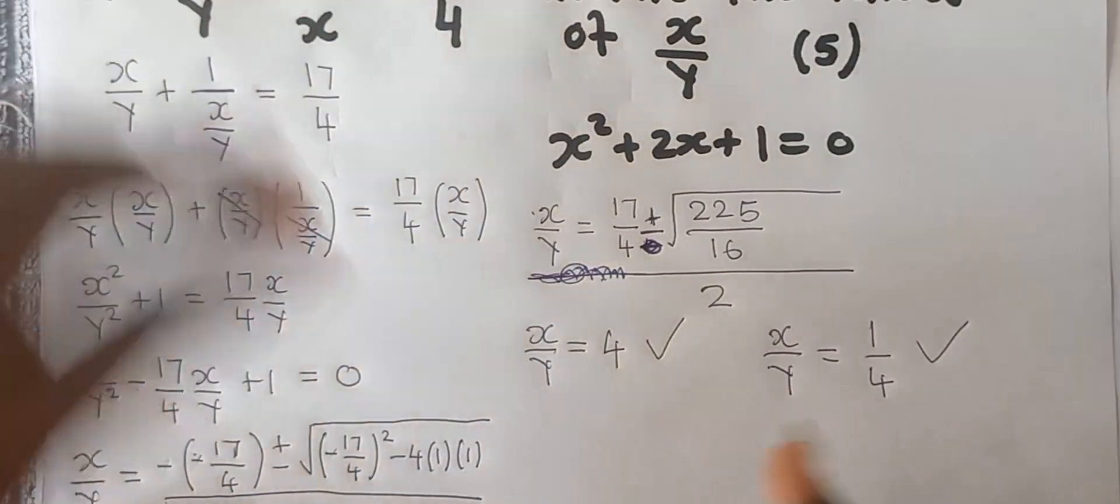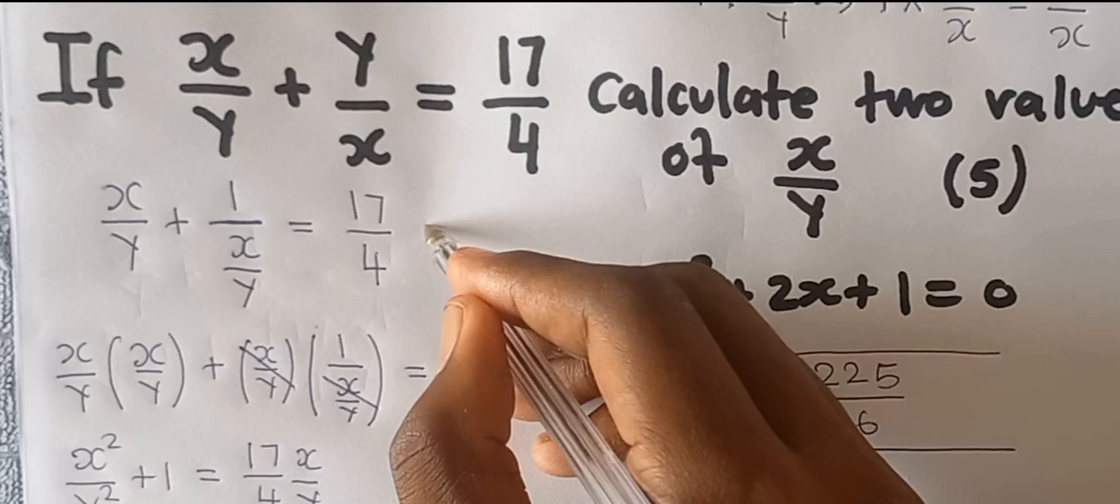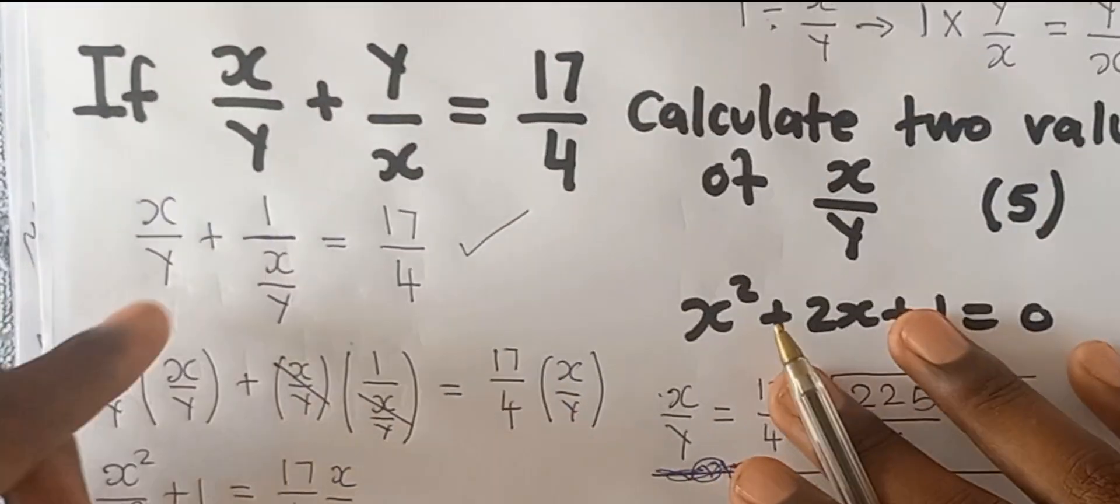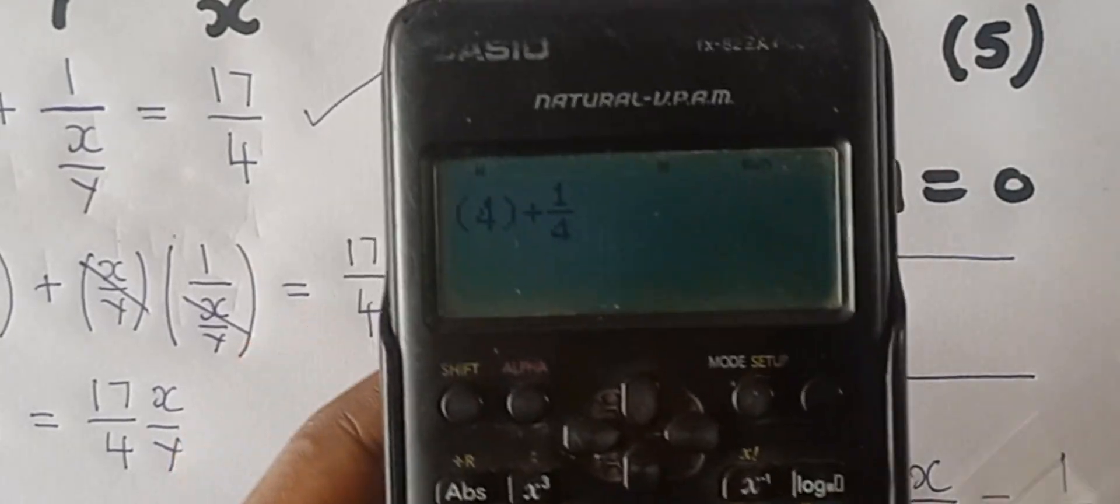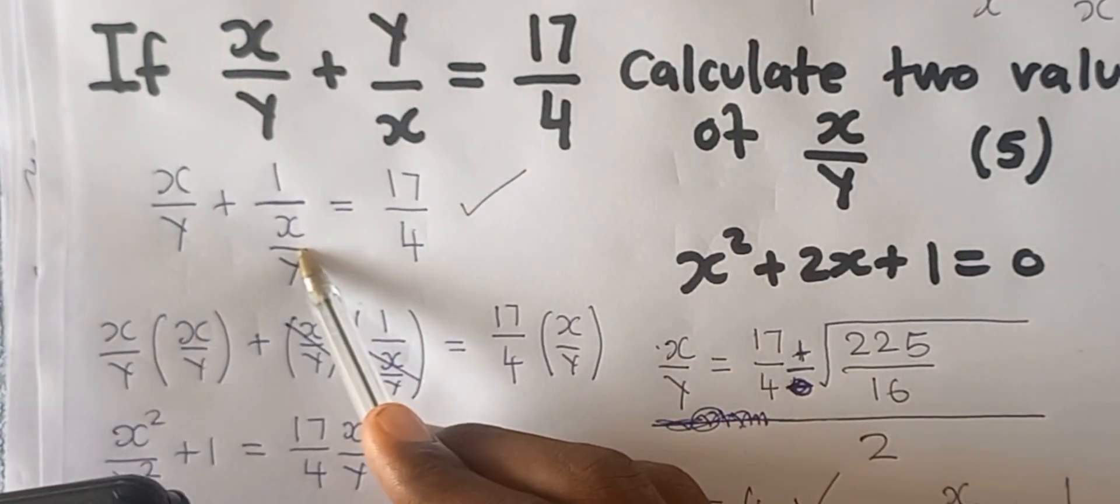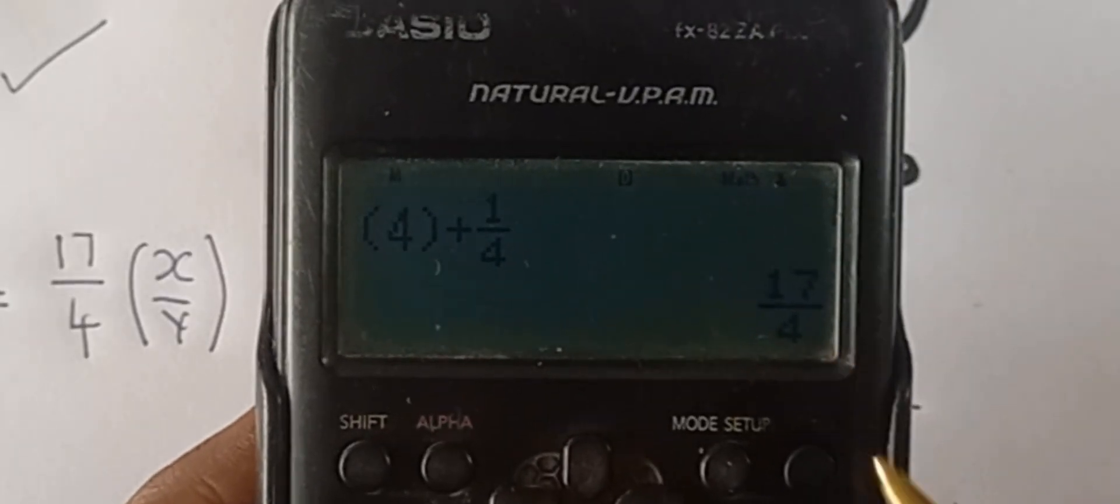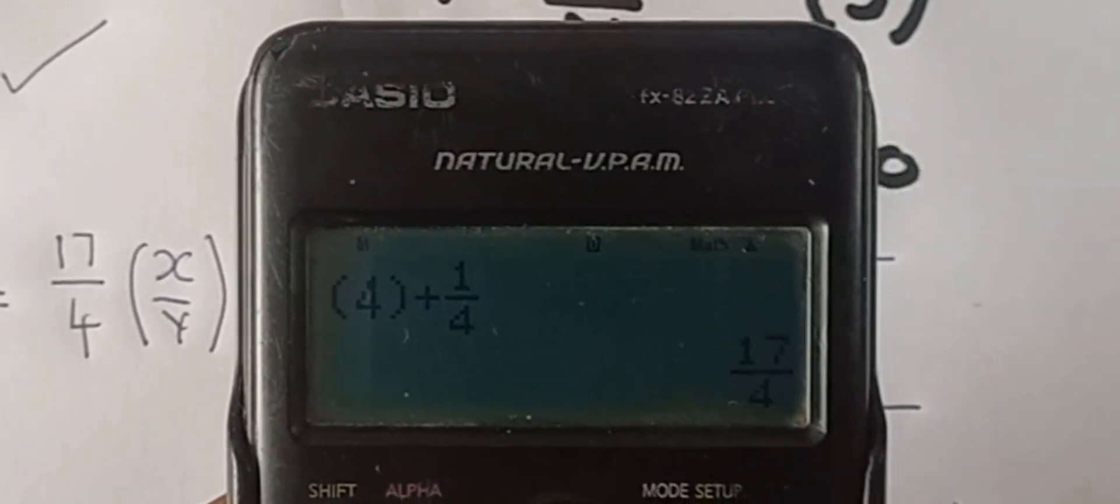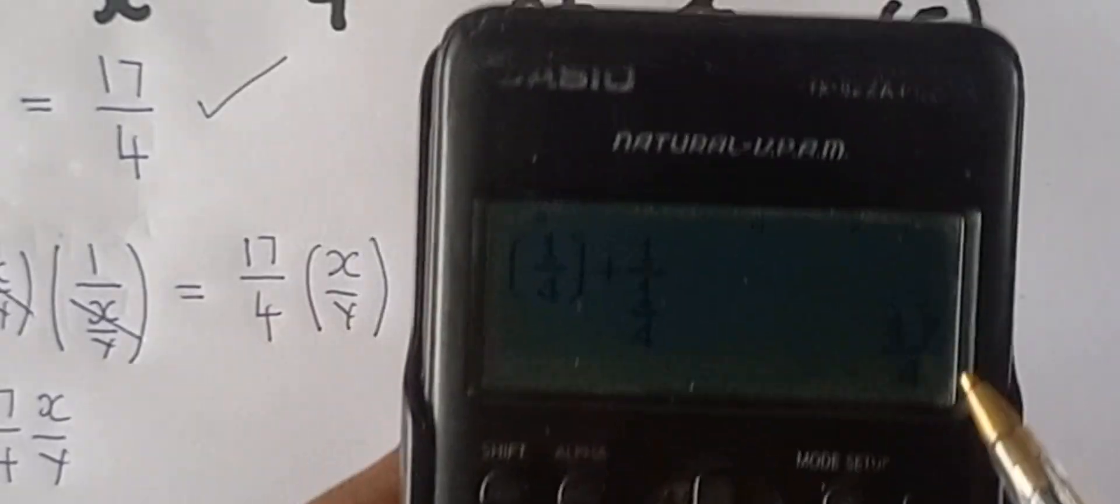If you don't believe these answers, you can try to test it out using this equation. Here it is - if you put 4 here, since there is x over y, you put 4 and you're going to get your answer which is 17 over 4. I hope this is clear. You can also try to put 1 over 4 and your answer is still going to be 17 over 4, which confirms that these two are right.